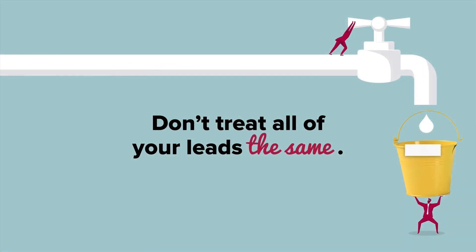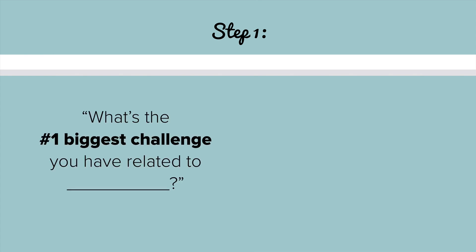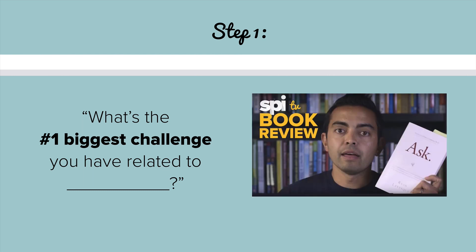The big lesson: don't treat all of your leads or emails the same. There are buckets of people with similar interests who would benefit from a different message than another bucket. Step one is to find out what your buckets are by asking a simple question — and this comes straight from a book I'll mention in a second: 'What's the number one biggest challenge you have related to blank?' If you're a photographer, you ask your photography subscribers that question and you'll get clustered answers you can group into different buckets.